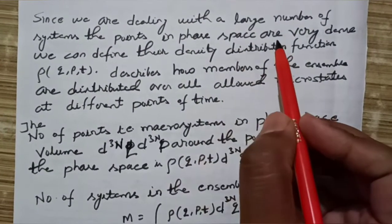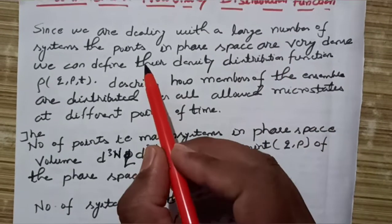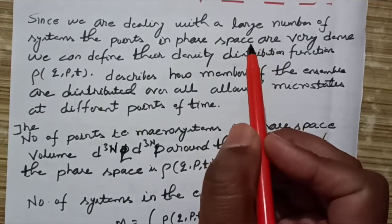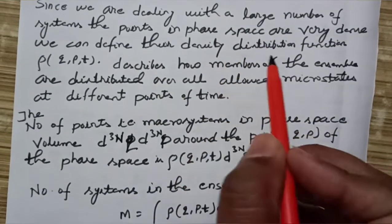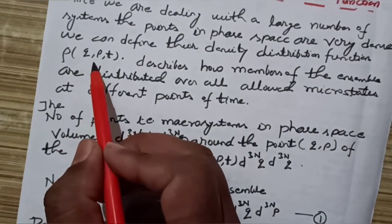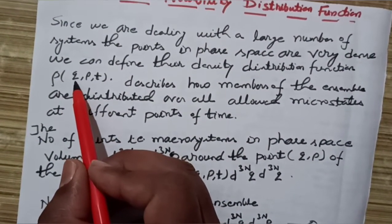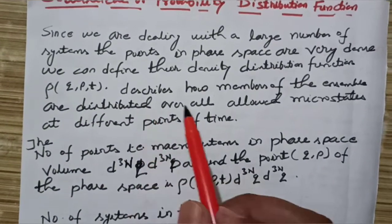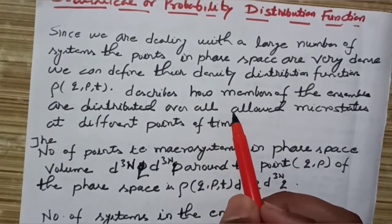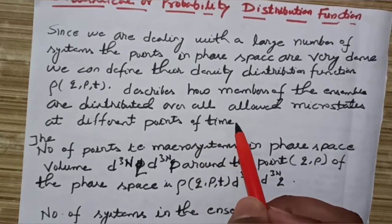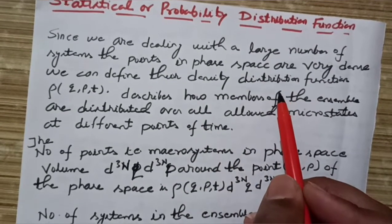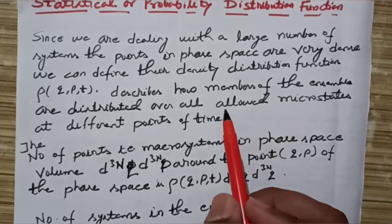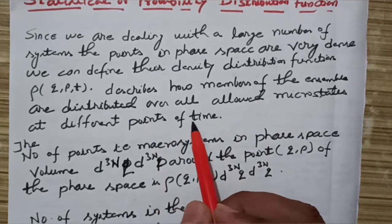Now, ensembles — we are dealing with a large number of systems, and in these ensembles the points in the phase space are very dense. We can say that, and so we can define the density distribution function by this quantity: ρ(q, p, t). Here q is the position, p is the momentum, and t is the time. It describes how members of the ensembles are distributed over all allowed microstates at different points of time.